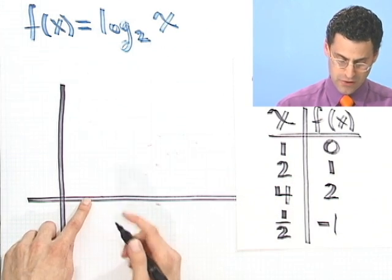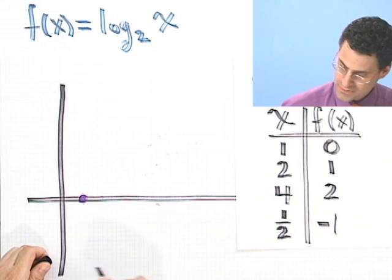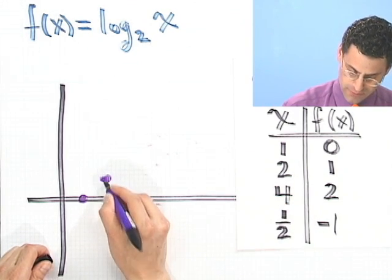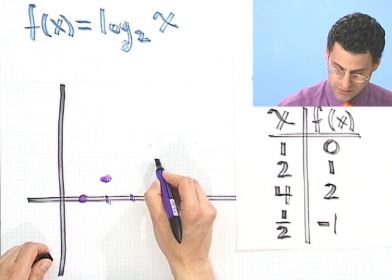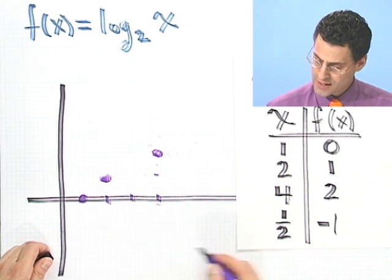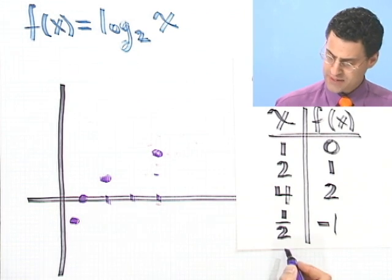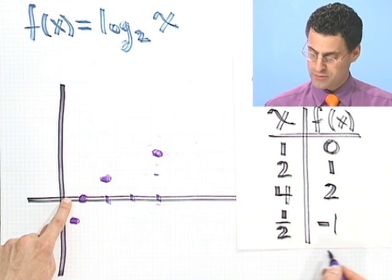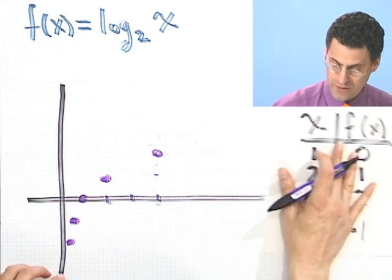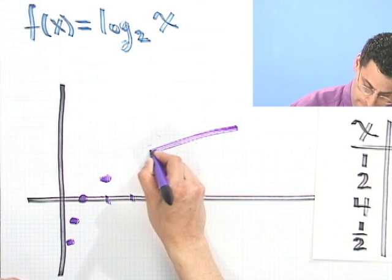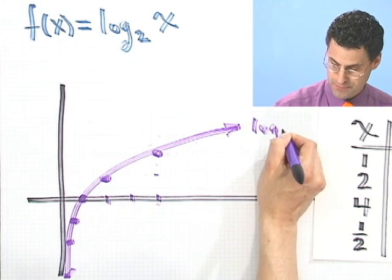Now I'm going to start plugging these points in. So 1, 0. I go 1 unit over and then 0, right here. Then 2, 1. So I go 2 and go 1 unit up. 4, 2. So 1, 2, 3, 4, and I go up 1, 2. And then at a half, I go negative 1. At a fourth, which would be right over here, would be negative 2. So you can see what's happening. I get a curve that looks like this. It grows very slowly. It's increasing. And it comes down like that. That's the log function base 2 of x.